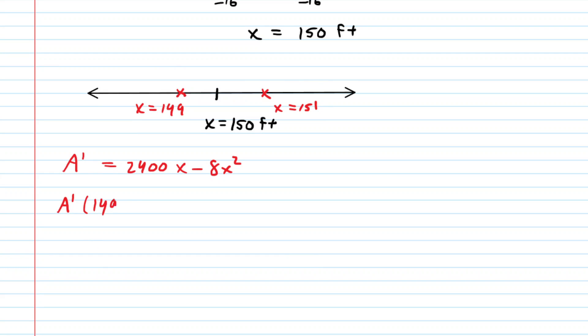And the precise value of the derivative at x equals 149 doesn't matter. What matters is whether it comes out to be positive or negative. Now, when you plug in 149, you should get a positive value for the derivative. So in other words, the derivative, a prime, is going to be greater than zero for the interval that is less than 150. So you get a positive value for the derivative. This means that the area function is increasing all the way up to x is equal to 150.